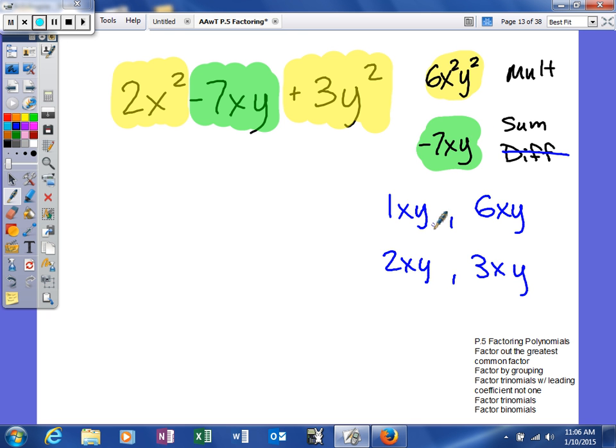So this helps us out to determine what those two things will look like. Now, the product is positive, but when I add them together, I get a negative. To get a product that's positive, both of the factors have to be the same two signs. They could either both be positive or they could both be negative. Since they add to get a negative, they both have to be negative. And the two factors that have a sum of negative 7 will be negative 6xy and negative 1xy.